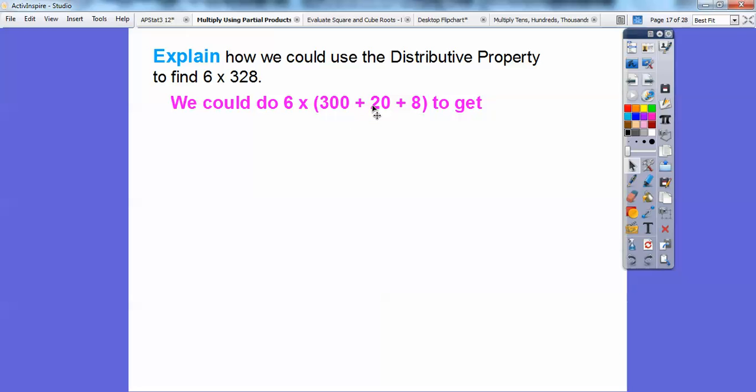6 times 2 is 12, so 12 with one 0. Finally, 6 times 8 is 48, so we can get that right there. And then when we add all those up, we get 1,968. Easy enough. If you just expand it out and then use the distributive property going through right there.